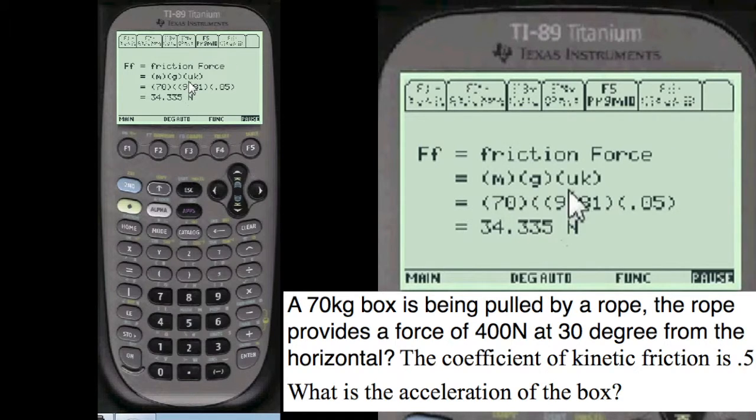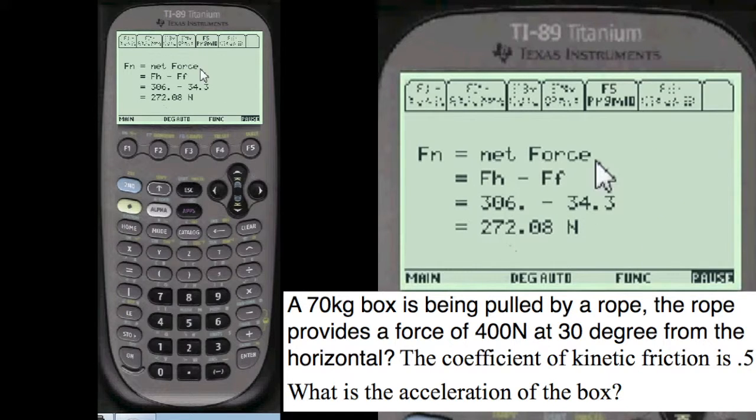And we find the horizontal force, which is the applied force times cosine of theta, equals 306 newtons.